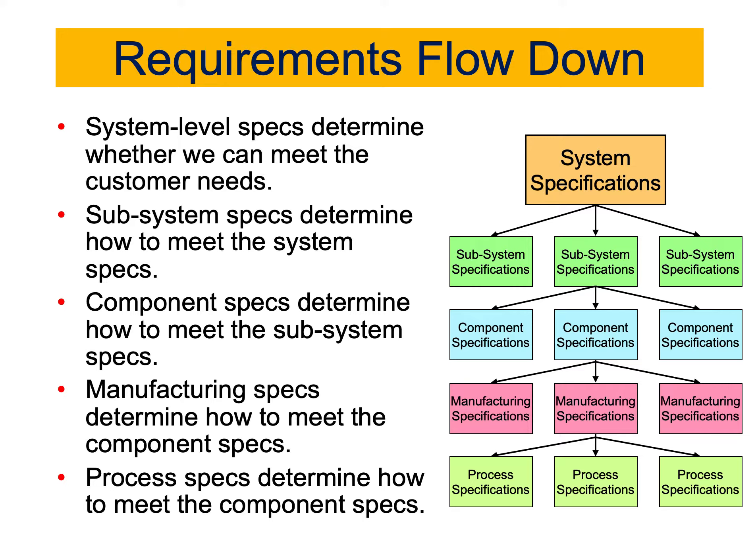We go from a system level to subsystem specifications, and then one step further down to identify the specifications for the components that make up those subsystems. After that, you need to look at the manufacturing specifications of each of these components, and then the process specifications that determine how to meet the component specifications. So for flow down, you need to break down your project into subsystems, then subsystems into components, then components into manufacturing specifications, and manufacturing into process specifications. It's a very clear structure.